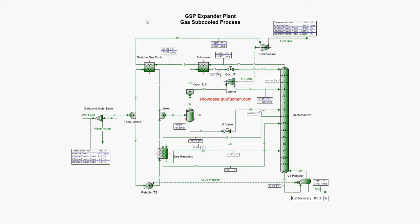There are generally three kinds of gas processing plants to get natural gas liquid (NGL) from natural gas. The first kind is the JT plant, which is suitable for high pressure and rich gas. The second kind is a mechanically refrigerated unit (MRU). The third kind is called a cryoplant, which utilizes a cryogenic turboexpander to extract NGL from very lean natural gas.